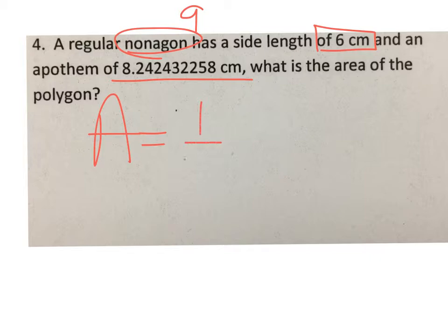So we use the formula: area of a regular polygon is one-half of the apothem times the perimeter. Now the perimeter is made up of two different things. It's the number of sides times the side length. That's how we find our perimeter.